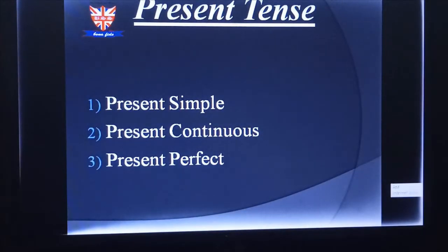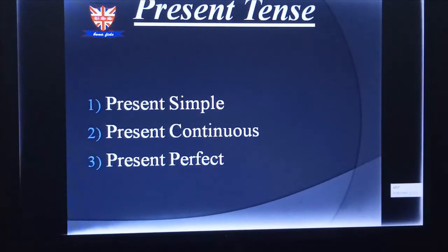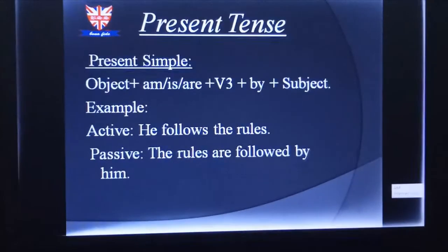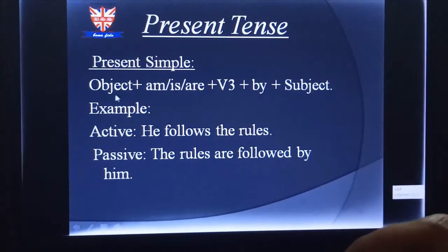Look at this slide. This is the classification of present tense in case of transformation of sentences. For present tense, we cover present simple, present continuous, and present perfect. We don't need to transform sentences in the case of present perfect continuous. In the case of present simple, you can see on the screen the structure is: object + am/is/are + V3 + by + subject.